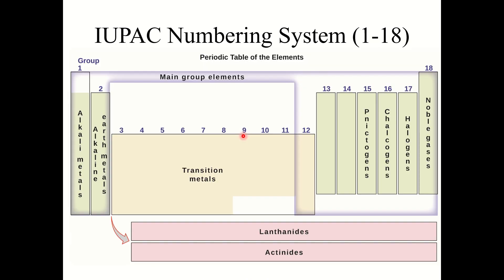The IUPAC numbering system is 1 through 18, so the group or column numbers go from 1 to 18. The transition metals are groups 3 through 12. The main group elements are columns 1, 2, 13, 14, 15, 16, 17, and 18. Sometimes these are numbered with A's: 1A, 2A, 3A, 4A, 5A, 6A, 7A, and 8A. These are the main group elements.